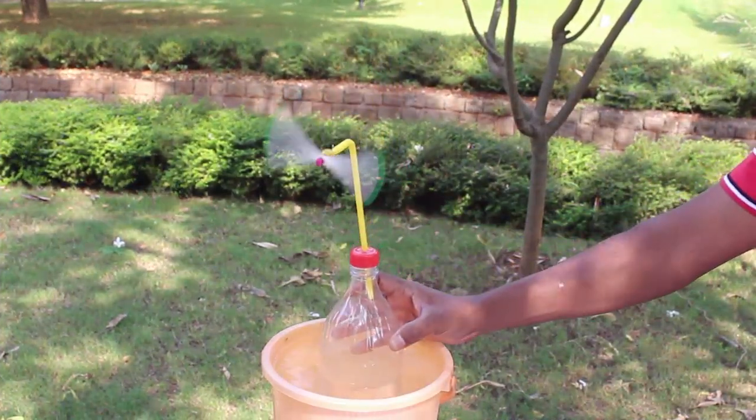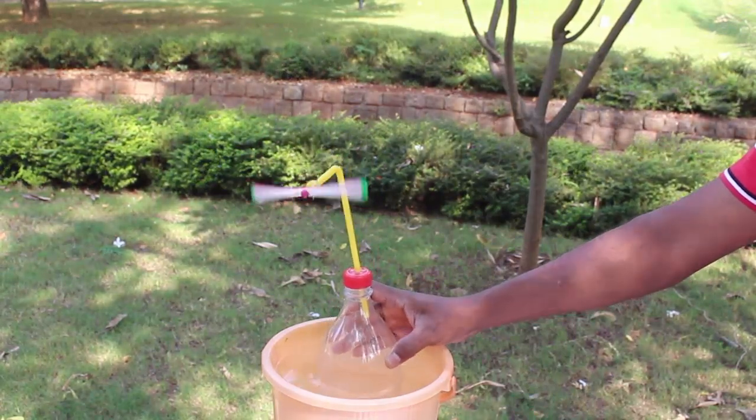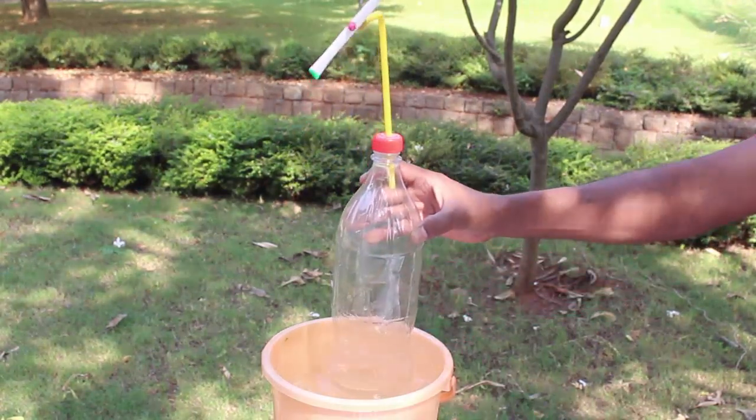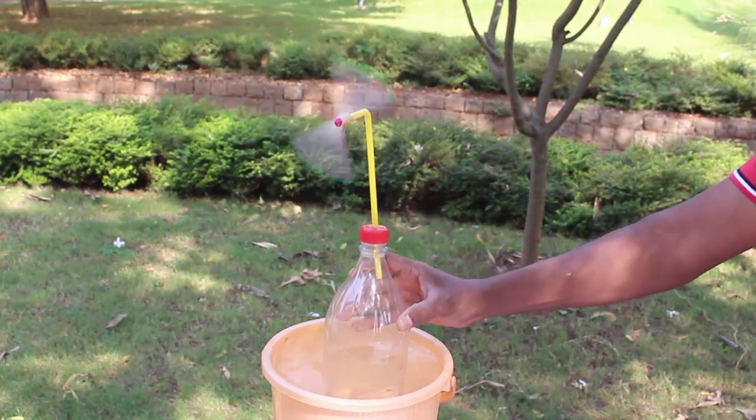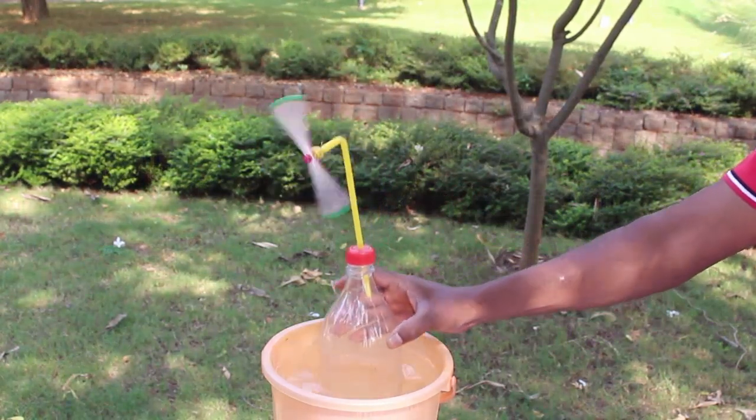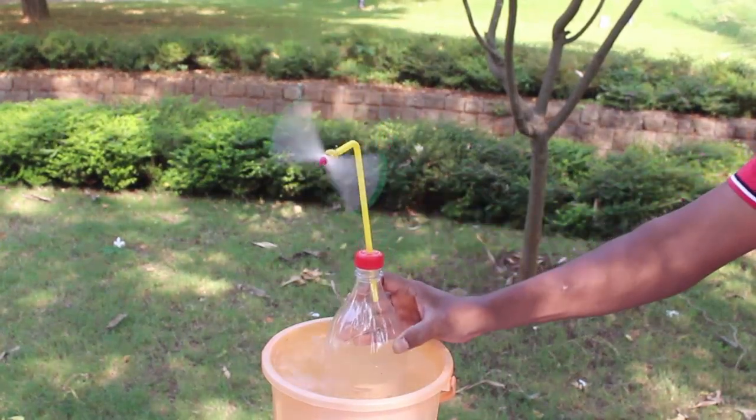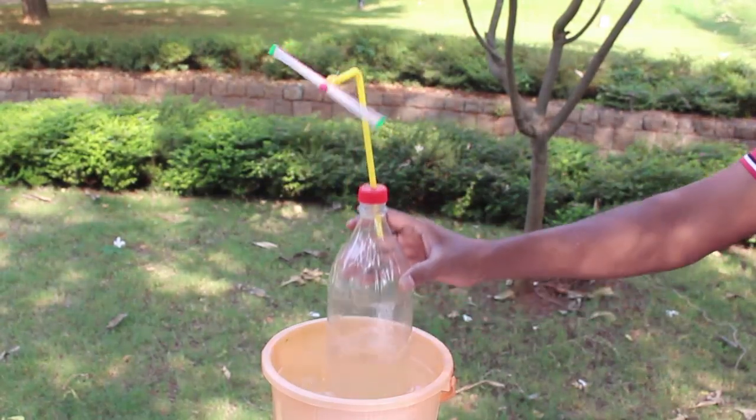Now plunge the bottle in a bucket of water. Water will enter the cut bottle and air will be expelled from the yellow straw. This air will emerge from the two diametrically opposite holes and spin the straw very fast.